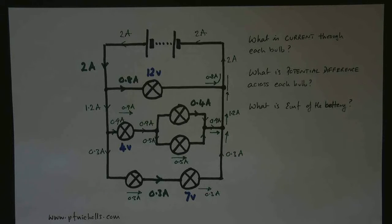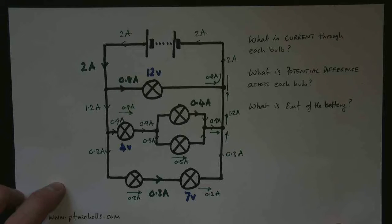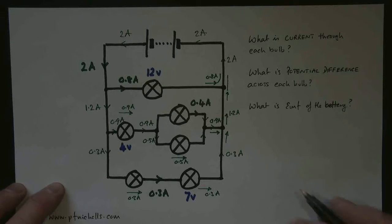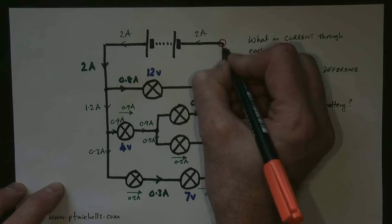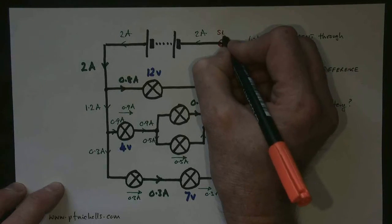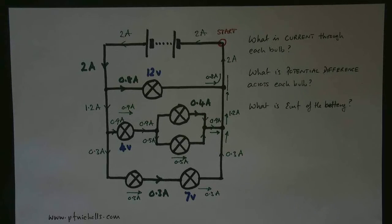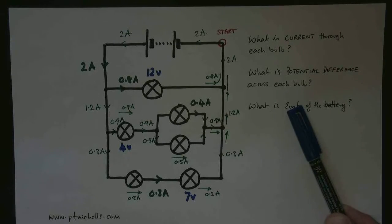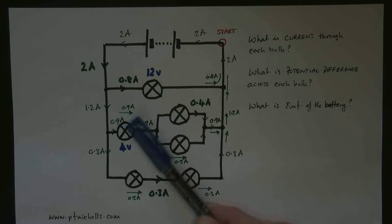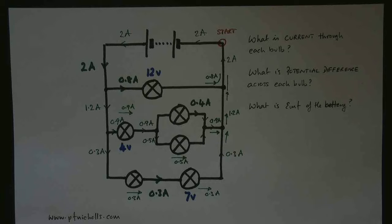Now let's turn our attention to voltage. Kirchhoff's voltage law states that for any particular journey around the circuit — any particular loop, starting and ending at the same place — the total EMFs must add up to the total potential differences. We'll pick an arbitrary starting point — this corner here. We could start anywhere and it wouldn't make any difference. We have a potential difference of 12 volts for this bulb, 4 volts for this one, and 7 volts for this one.